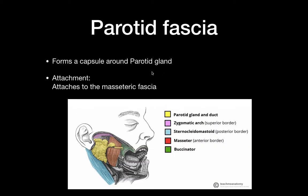The next fascia is the parotid fascia. Again, it's in the name — it forms a capsule around the parotid gland and then attaches to the masseteric fascia.